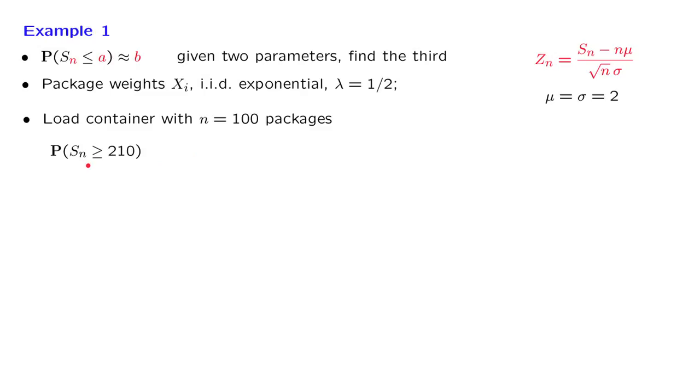Then the next step is to take this event here and rewrite it in a way that involves this random variable. So we take the original description of the event, subtract from both sides of this inequality nμ. In this case, n is 100, μ is 2, so we subtract 200. Divide by this quantity: square root of 100 is 10 times sigma, which gives us 20. And we do the same on the other side of the inequality.